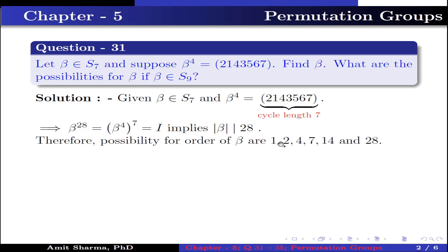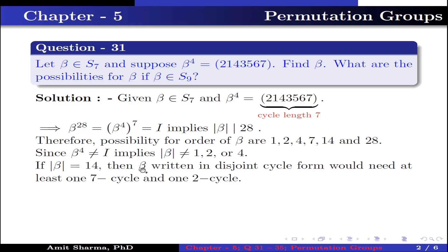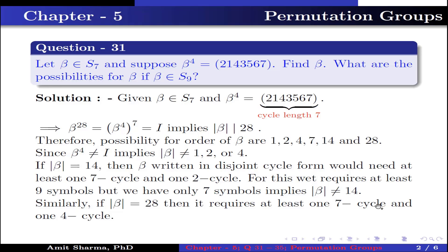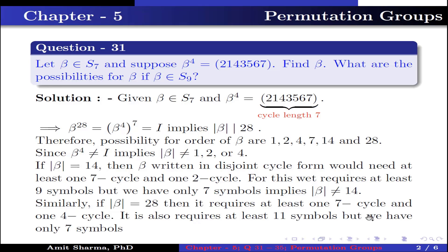Therefore, the possibilities for the order of beta are 1, 2, 4, 7, 14, and 28. Since beta^4 is not equal to identity (it is the given non-identity permutation), the order of beta cannot be 1, 2, or 4. If the order of beta is 14, then beta in disjoint cycle form would need at least one 7-cycle and one 2-cycle, requiring at least 9 symbols, but we have only 7. Similarly, if the order is 28, it requires at least one 7-cycle and one 4-cycle, needing at least 11 symbols. So the order of beta cannot be 14 or 28.